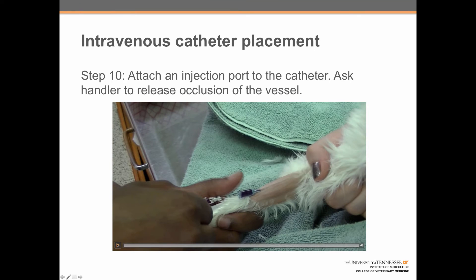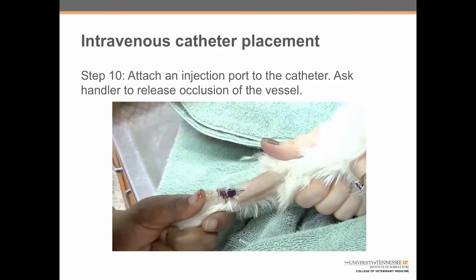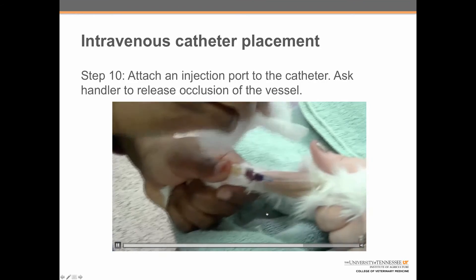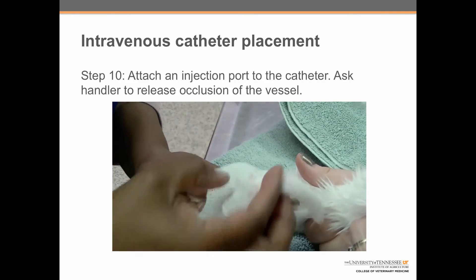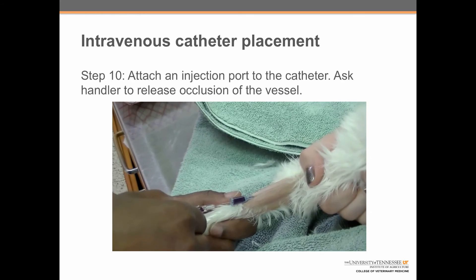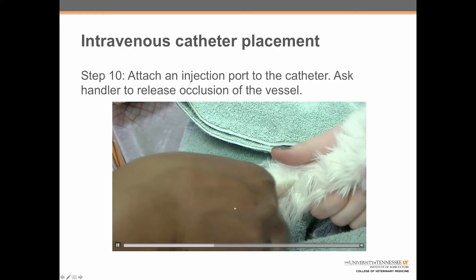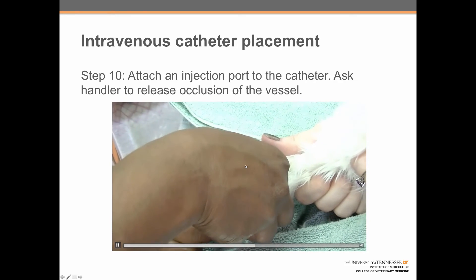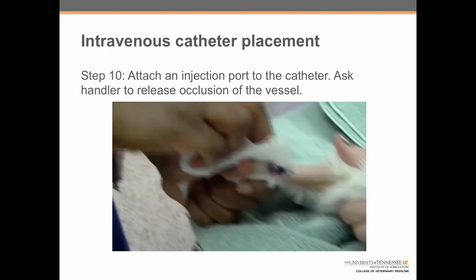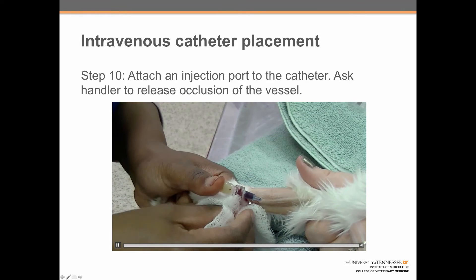Step 10 has two parts done simultaneously. It's important to put an injection port on the catheter as soon as the stylet is taken out, so you don't end up with blood everywhere. At the same time, ask your handler to release the occlusion of the vessel so that excess blood does not come out the hub. Shanna screwed the port on while the handler was releasing occlusion. She uses her thumb against the hub, not applying too much pressure so it doesn't pop out, but keeping it straight onto the vessel so the catheter is not lost.